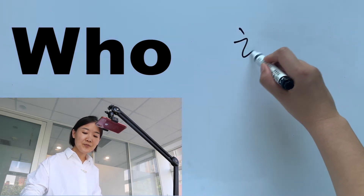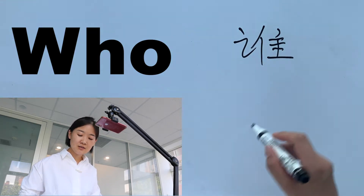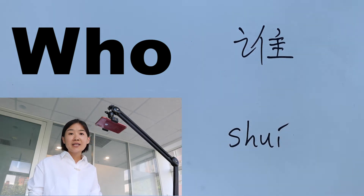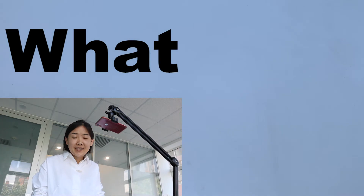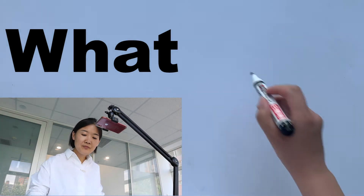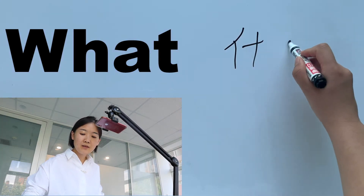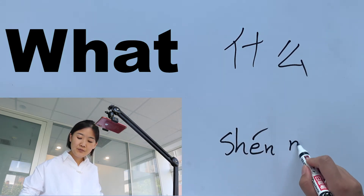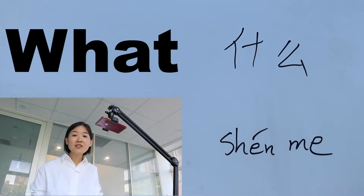Let's learn questions in Chinese. After the character, I'll give you an example sentence — let's try and guess the meaning. The first one is 什么 (shén me). Here is the character, and this is the pinyin. 你不喜欢什么? What is 什么? 什么 means 'what'. 这是什么?